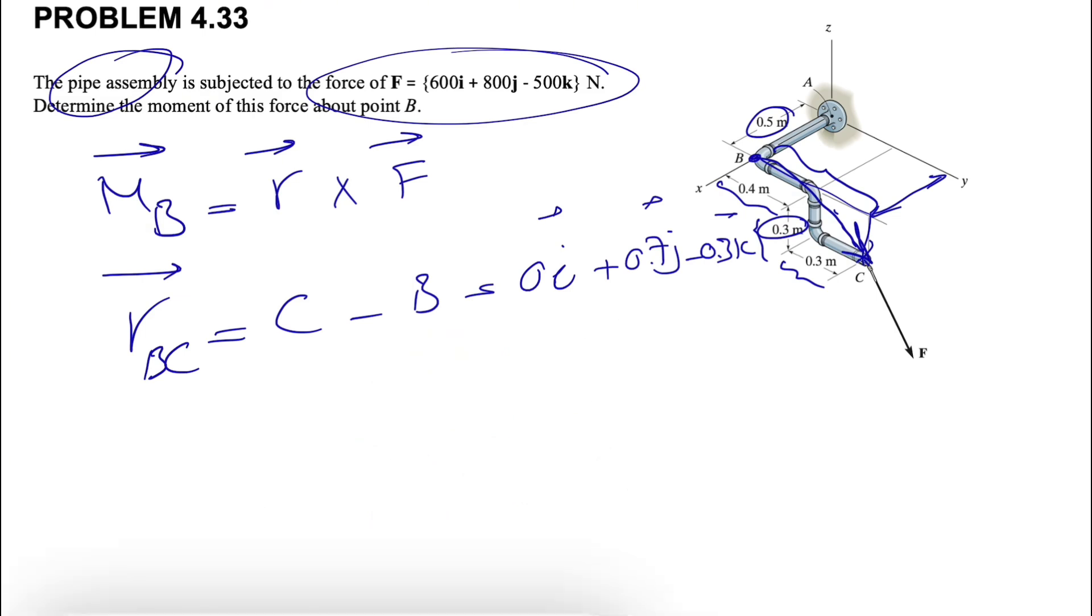So all we need to do is to find the determinant, which we have I, J, K. The first row is I, J, K. The second row in here would be R, and the third row in here would be F.